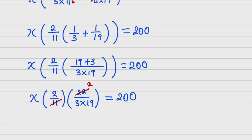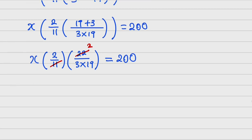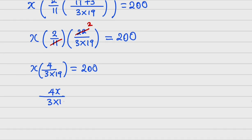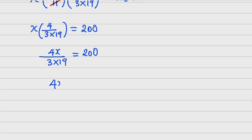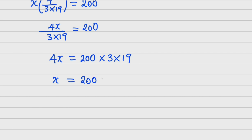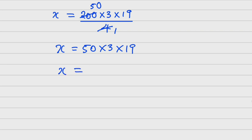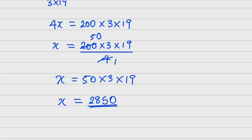So 4x over (3×19) equals 200. Cross-multiplying: x = 200 × 3 × 19 / 4. The 4 divides into 200 giving 50, so x = 50 × 3 × 19 = 50 × 57 = 2850. It's as simple as this — I didn't use any calculator. I want to believe you enjoyed the video, so please subscribe for more interesting videos.